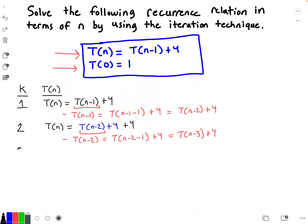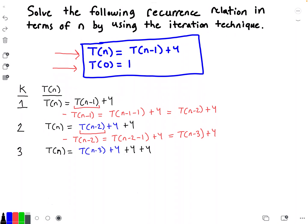So for the third iteration, I put 3 under column K, and T(n) is equal to T(n-3) plus 4, then add the 4 from the previous iteration, and add another 4 from the first iteration. I'm going to stop here because I already see a pattern — and that's exactly what you want. If you don't see a pattern yet, keep doing these iterations until you do.